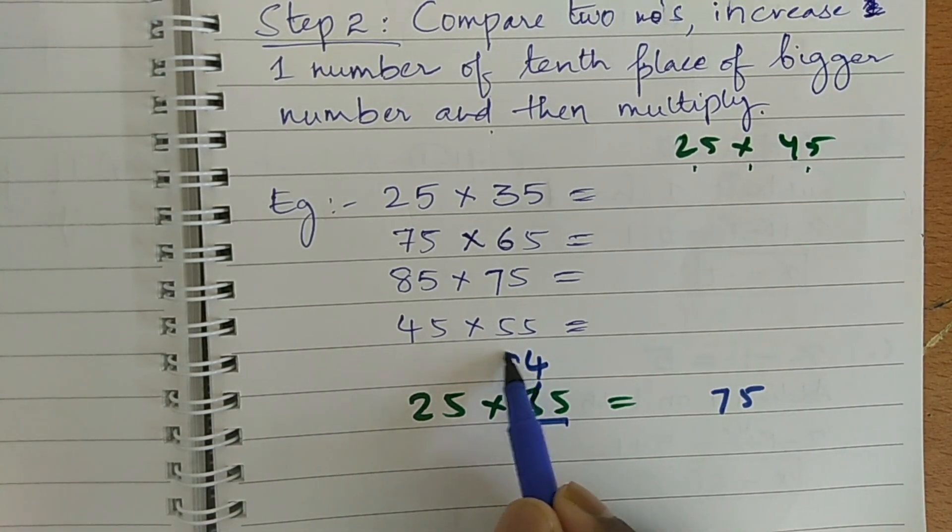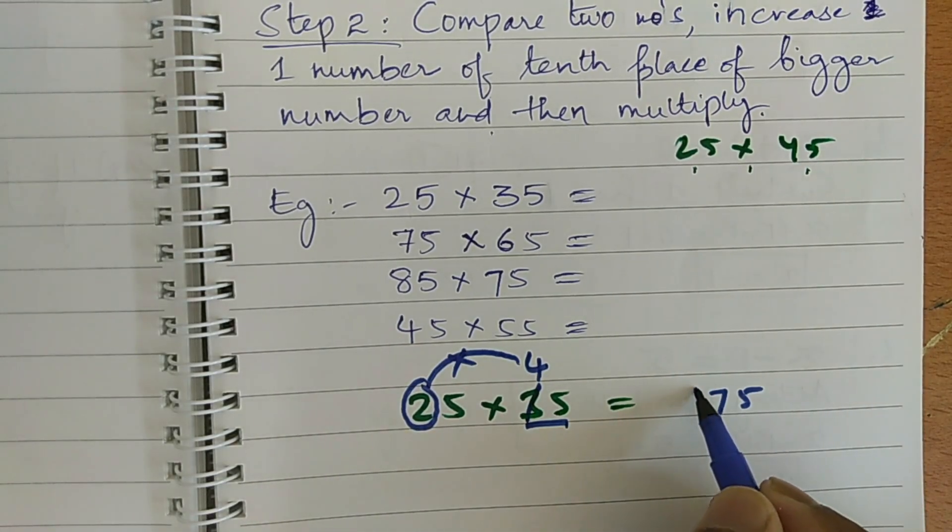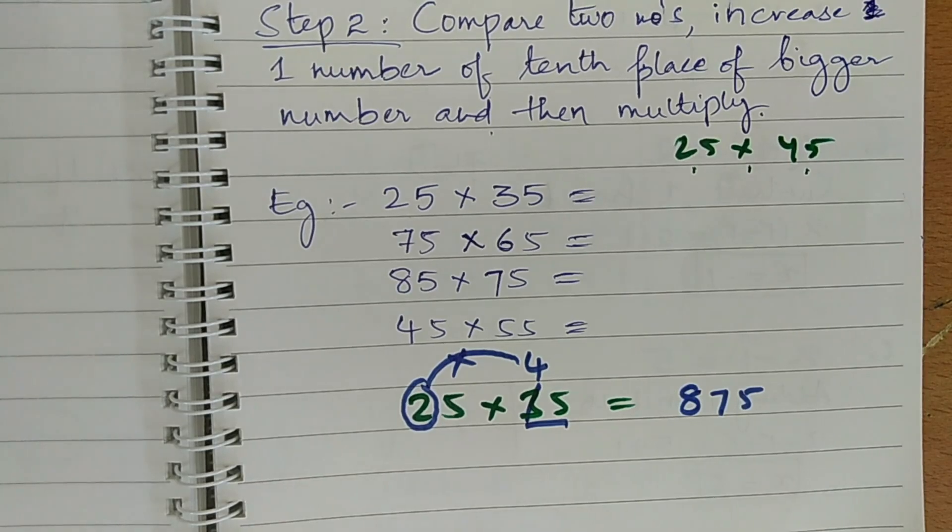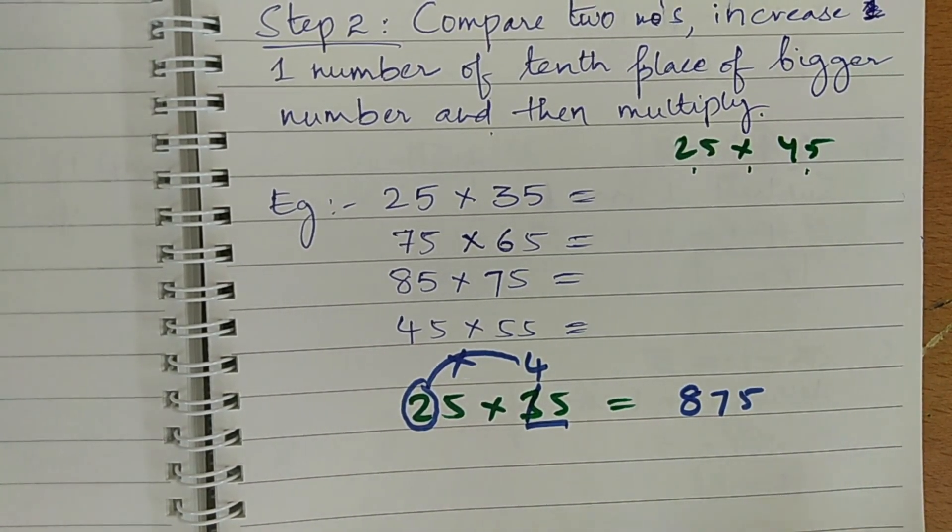Now, here I can directly easily multiply 4 into 2. 4 into 2 is 8. So, like this quickly, I can find the answer. So, 25 into 35, the answer is 875.